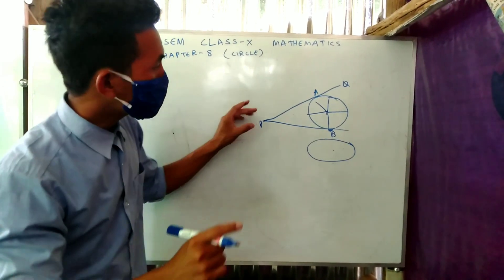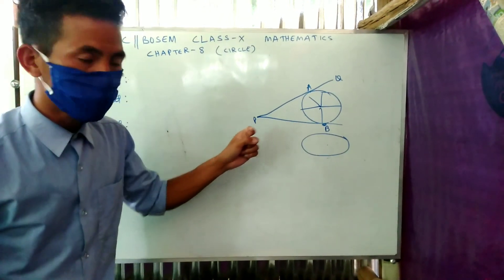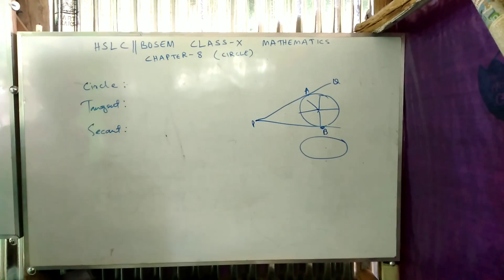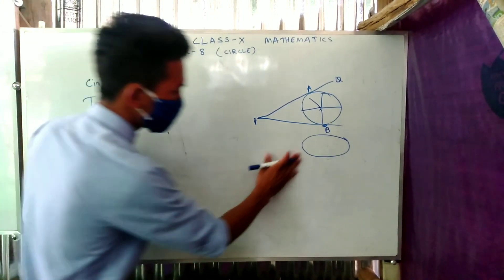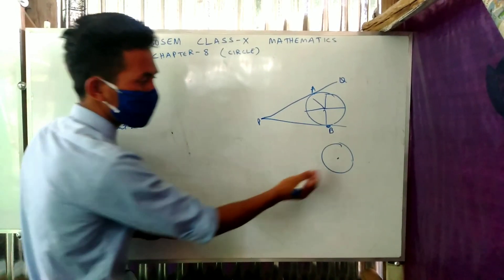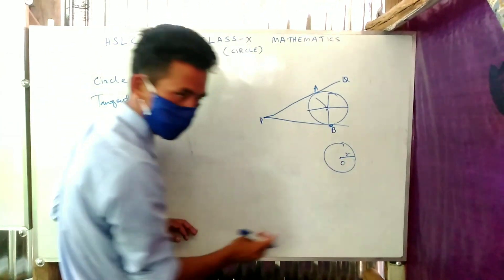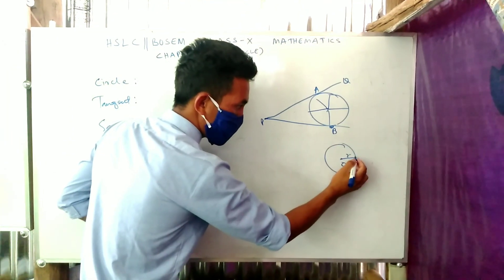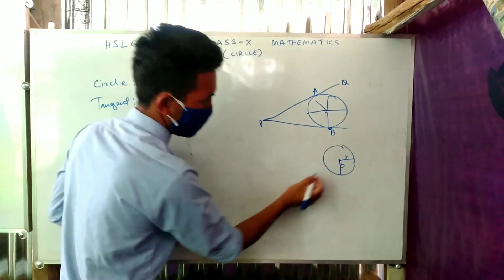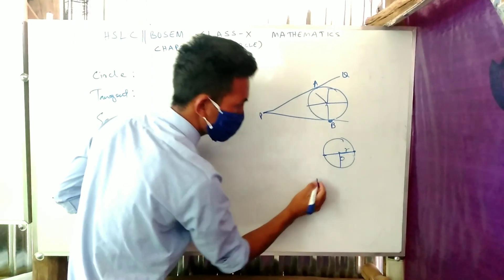There are two tangents from an external point — the CQ line and the BQ line — each being a point of contact. This is the radius of the circle.